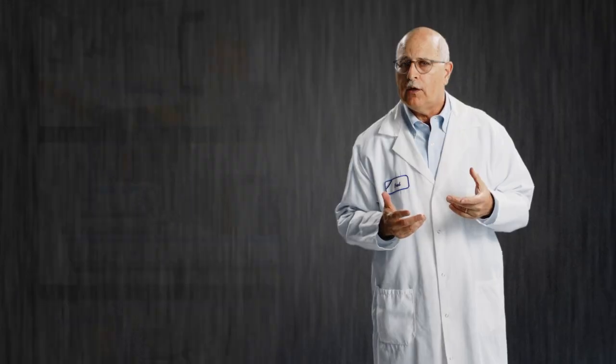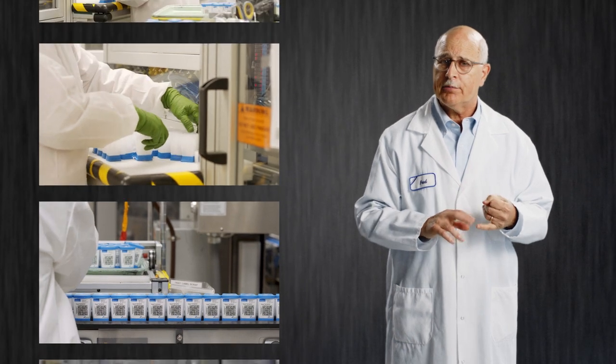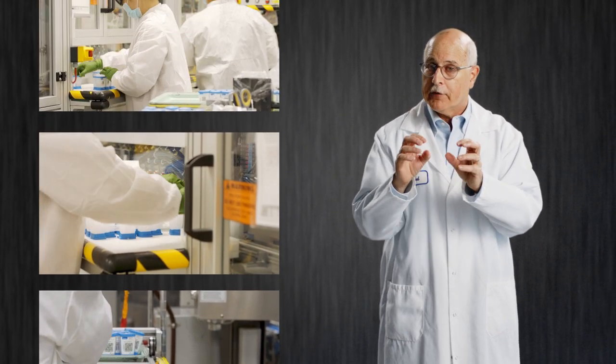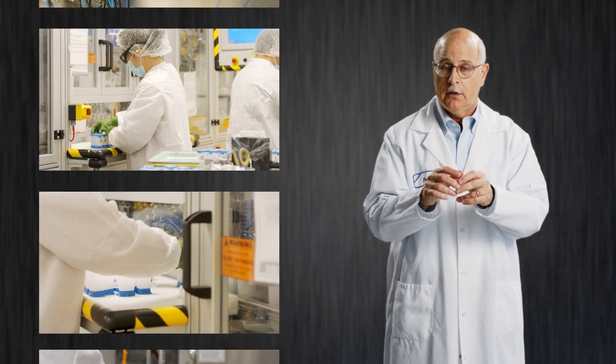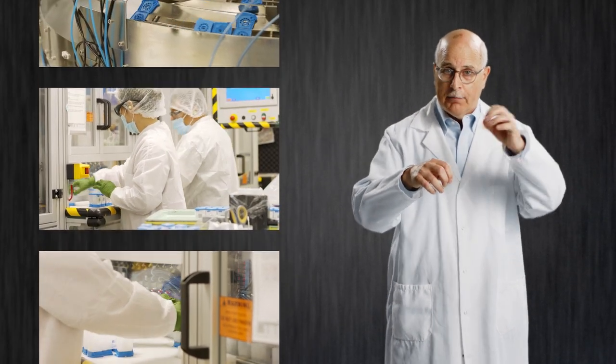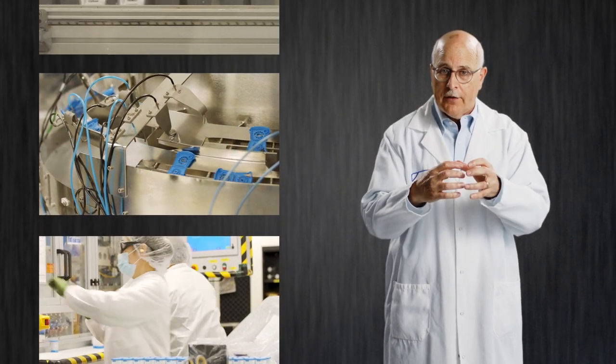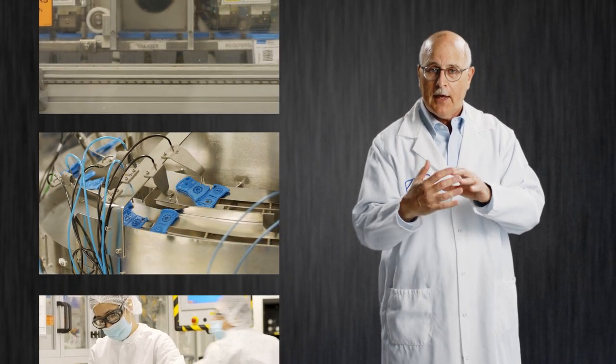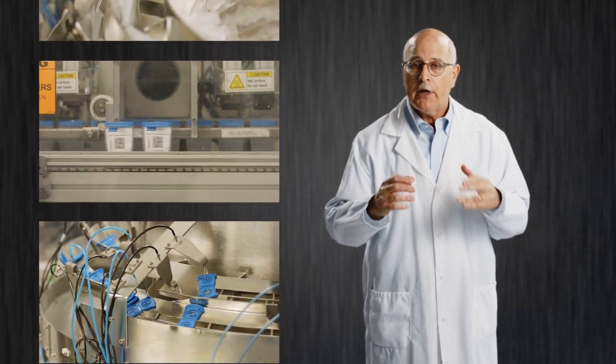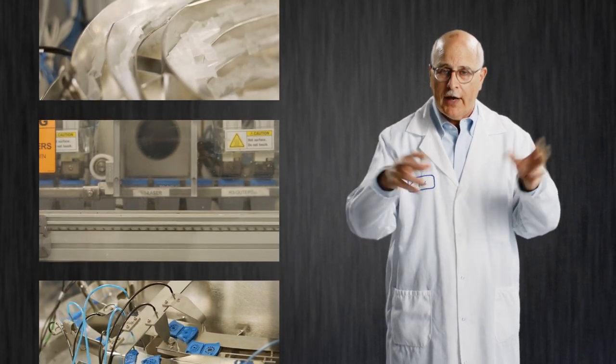So now we have the situation where the research and development team has done their job. They've developed this assay. Now we have to hand it off to manufacturing and say, build this for us. So what does that actually mean? Well, this is a pretty complicated process because we have a cartridge, a very intricate piece of plastic. We have reagents and buffers and beads that need to go into that. We need to put this all together and have a label on it. And in order to do that, we need a pretty competent team of people to put everything together.